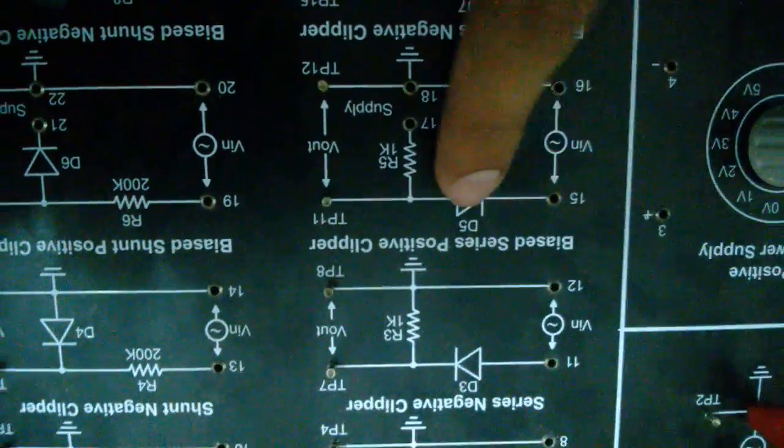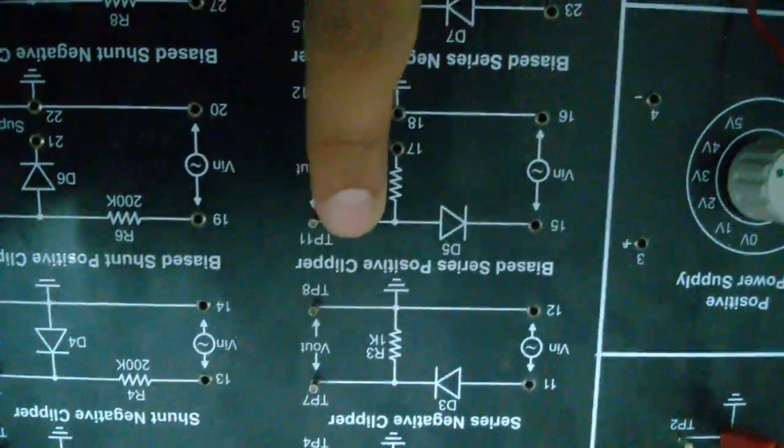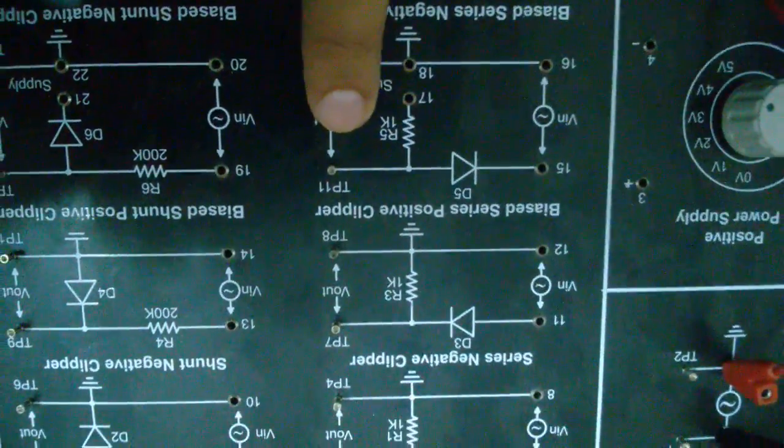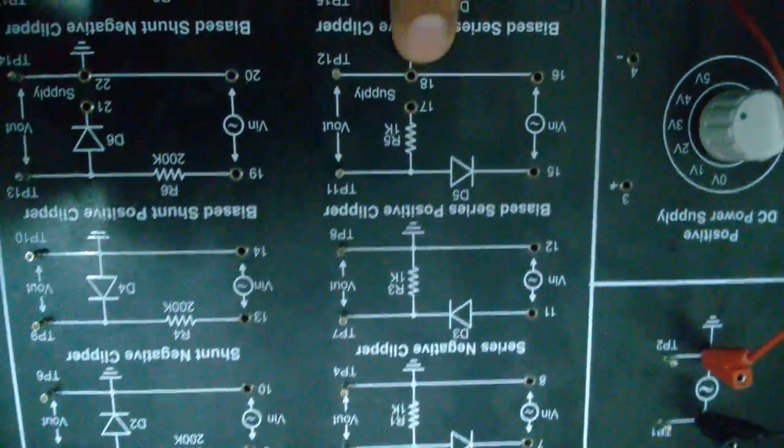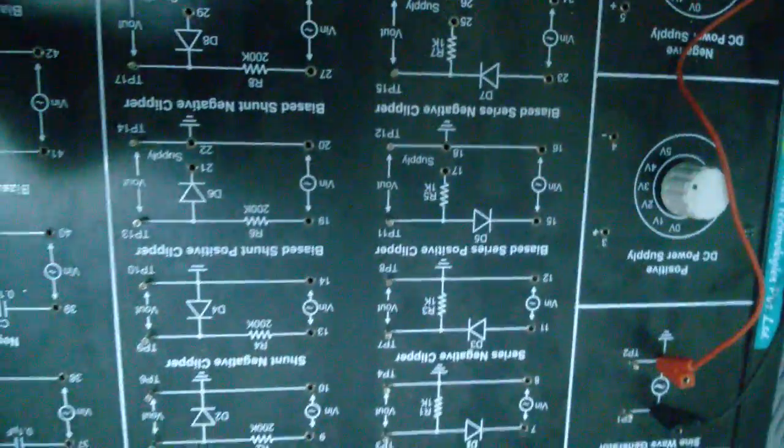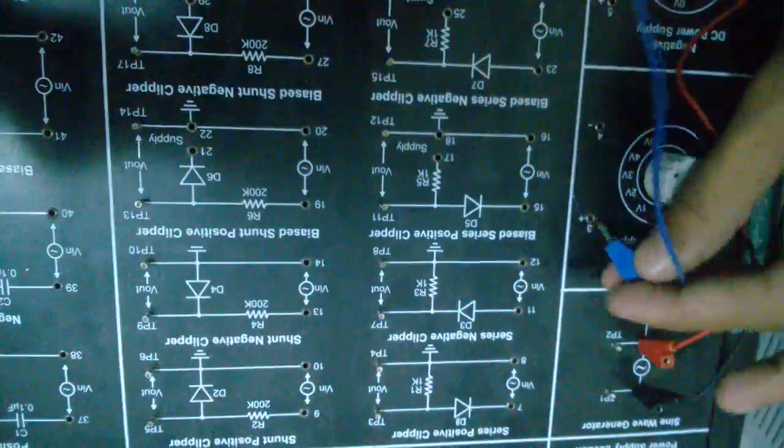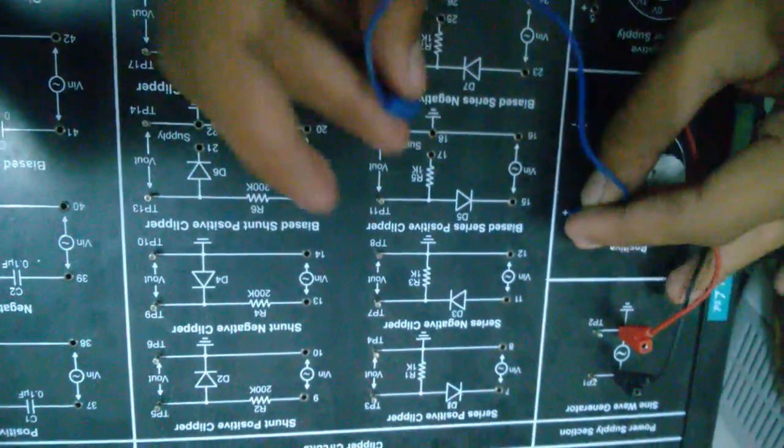Here is the bias series positive clipper. In the bias series positive clipper, we can use a battery source also. Here I am connecting a battery also, by which we can modify the signal again.